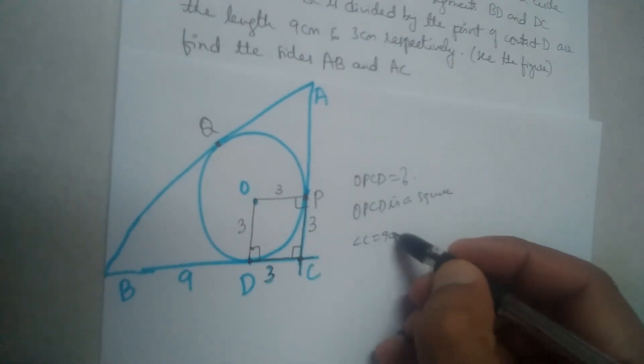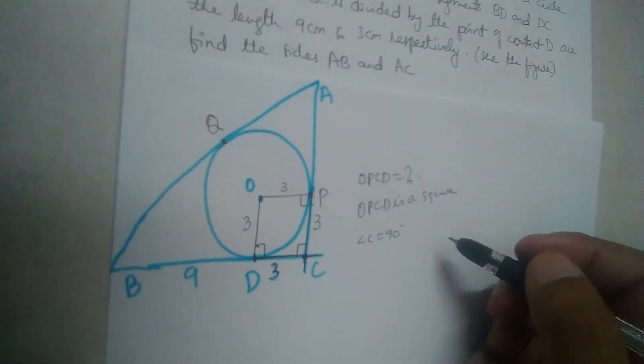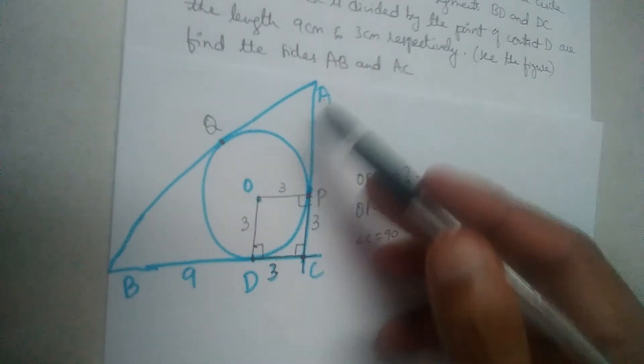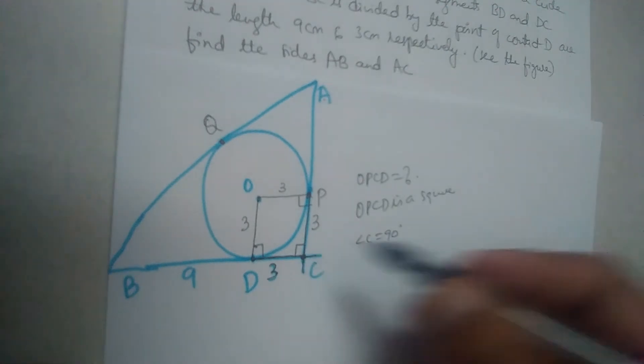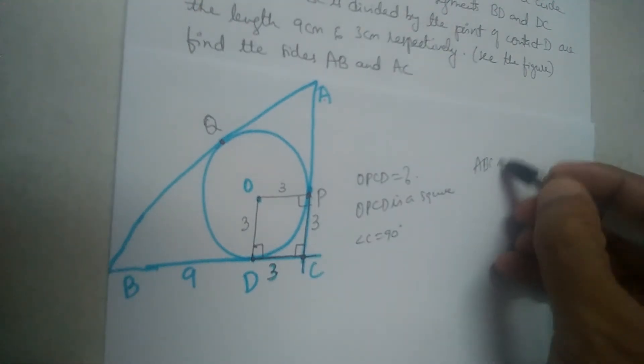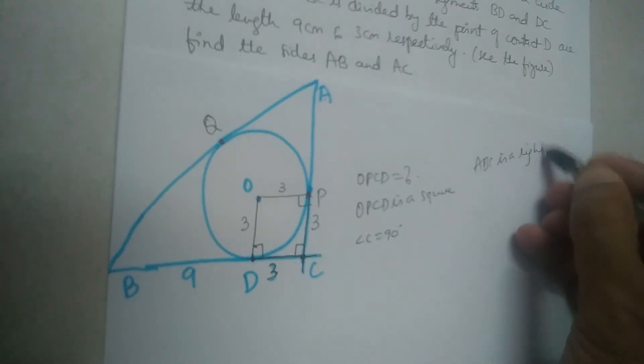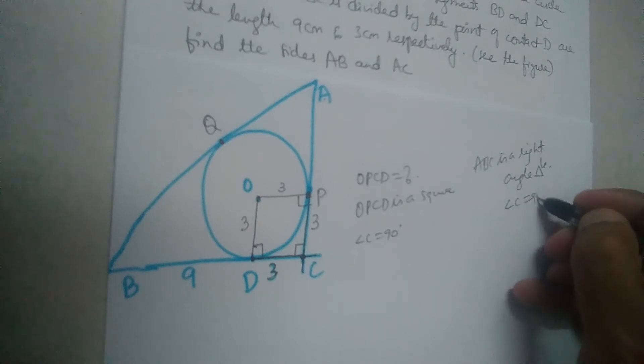Can we say triangle ABC is a right angle triangle, right angle at C? Yes. ABC is a right angle triangle with the right angle at C.